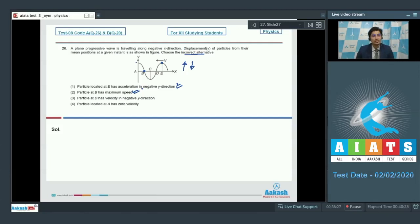Statement 3 says that the particle at d has velocity in negative y direction. To find out the velocity, let us draw the shape of the wave after a certain time period. Since this wave is moving leftwards, therefore, after a certain time, the wave will look somewhat like this. Dear students, we can see that the particle at d will actually move upward and hence option number 3 is an incorrect statement and has to be our answer.